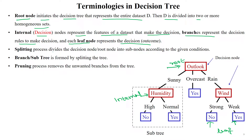Each leaf node denotes the outcomes — yes or no, zero or one. The splitting process is used to divide the decision node or root node into sub-trees or sub-nodes according to given criteria. Pruning is one of the important processes, used to remove unwanted branches from the tree — those branches that are not needed to make decisions — thereby removing unwanted paths in the decision tree.